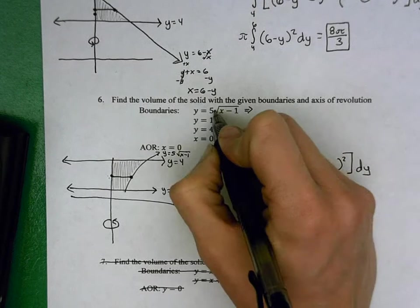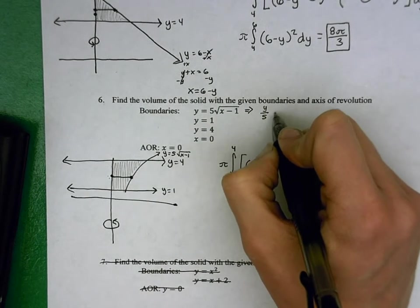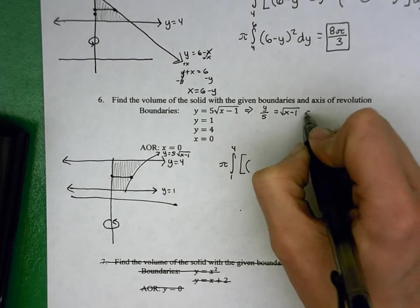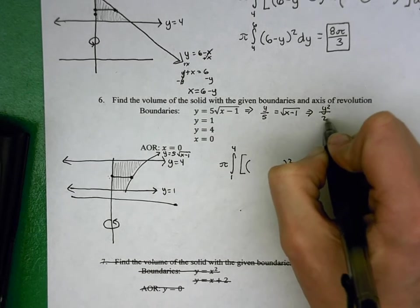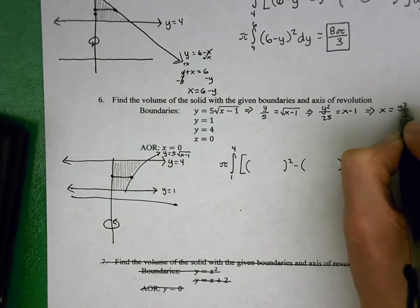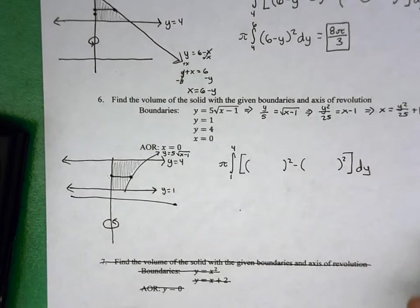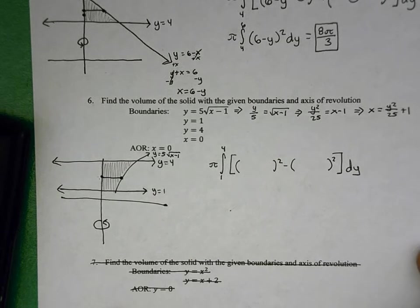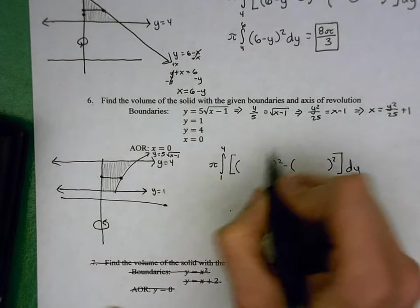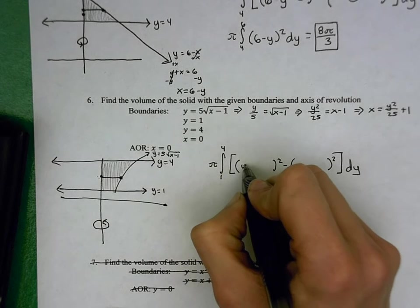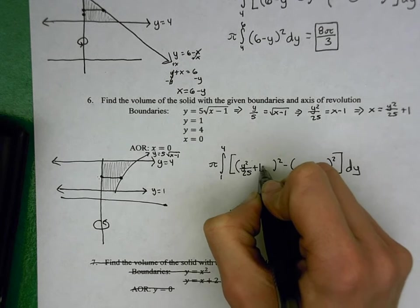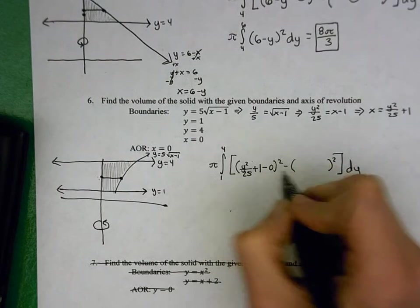I'm going to start by dividing that 5 over, and then I can square both sides to get rid of the square root, and then add the 1 over. So we get x equals y squared over 25 plus 1. That is this equation. So I'm going to put in y squared over 25 plus 1 minus my lower, which is 0. That's my big R.